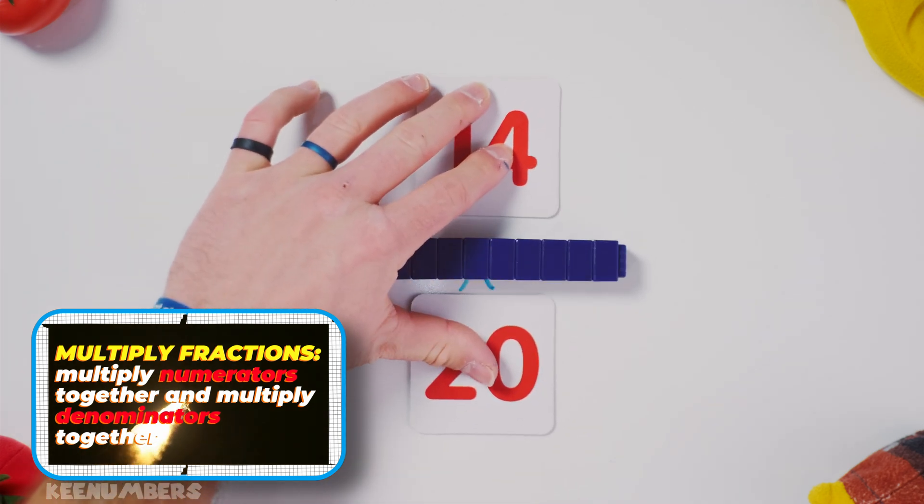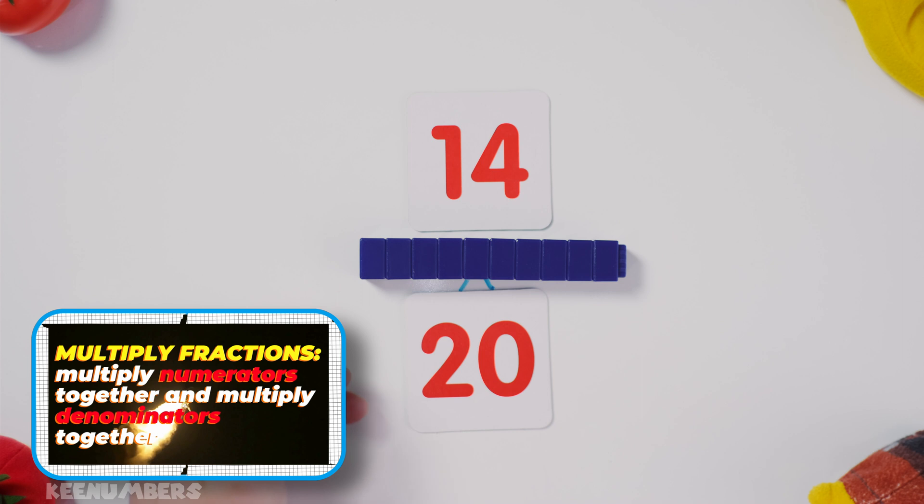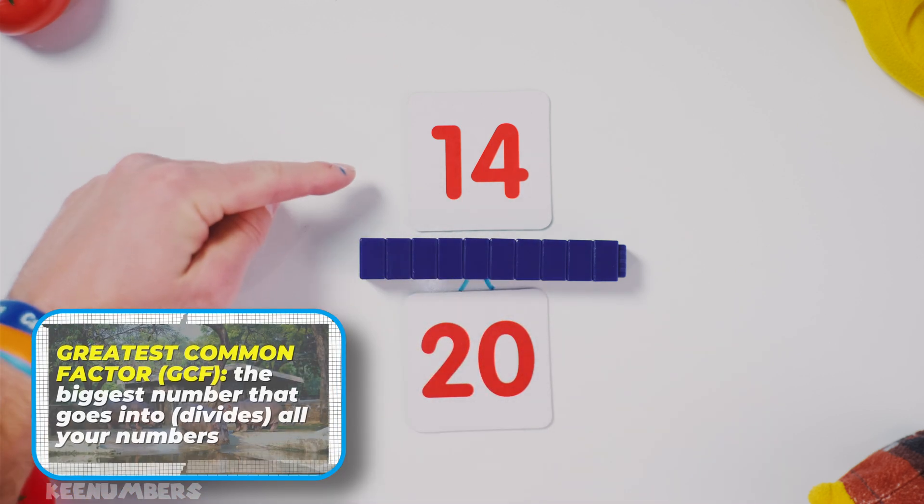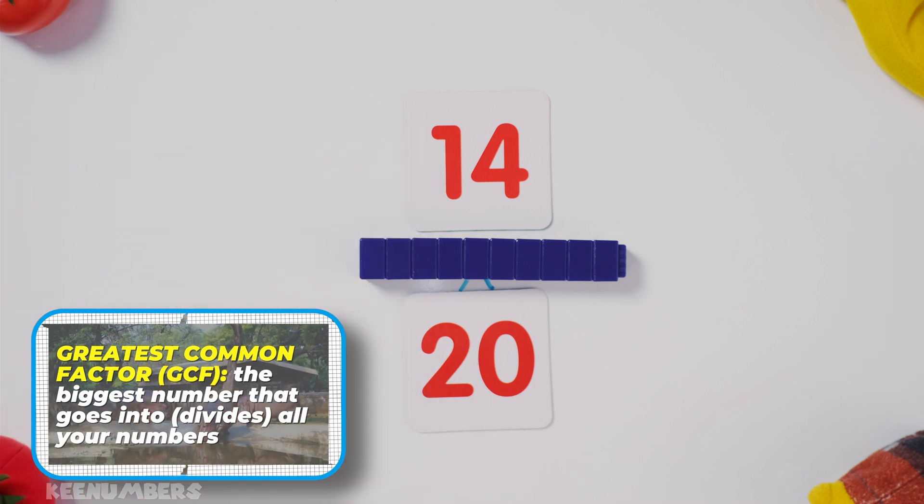Now we can simplify this, and we could have done it beforehand. That's okay. You probably saw it. What's the common factor here? In fact, what's the greatest common factor? The biggest number that goes into both of them? You'd be right if you said two.